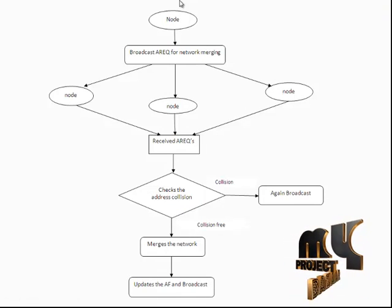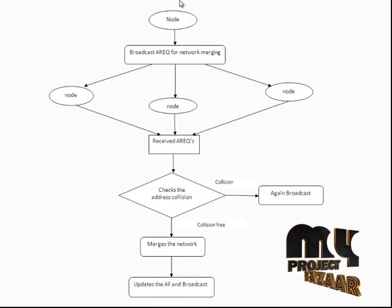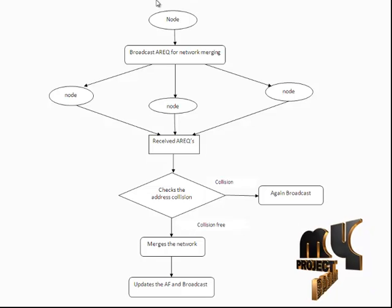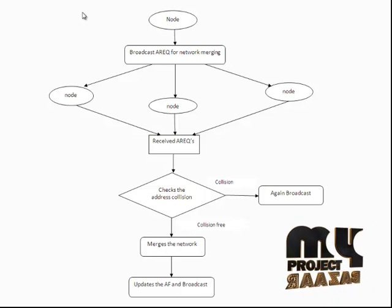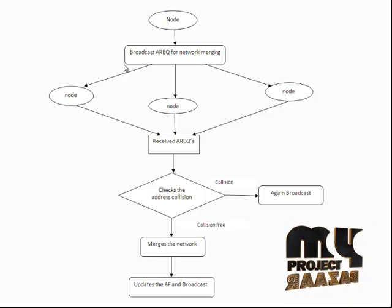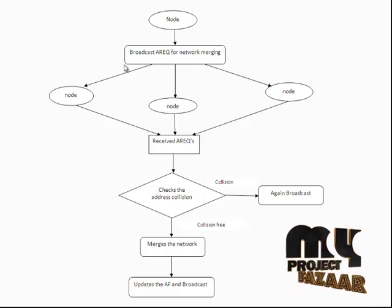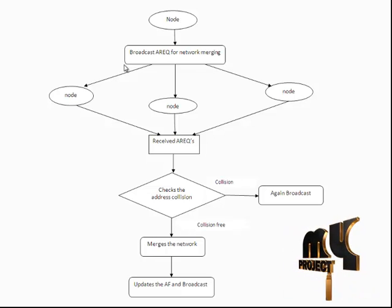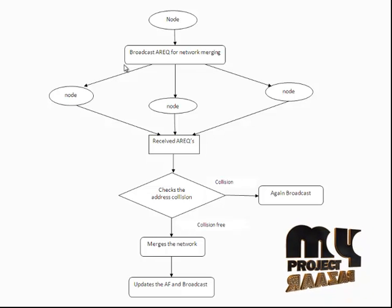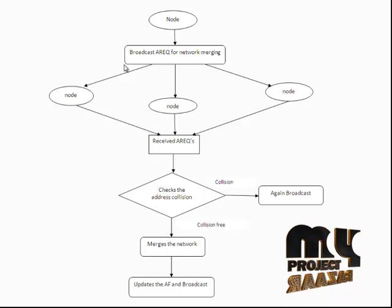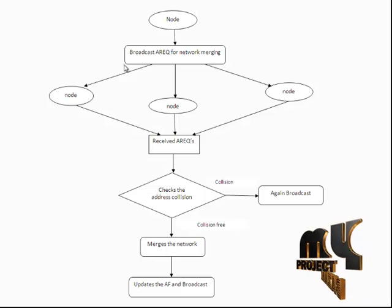The second process is partition merge. The node first broadcasts an address request for network merging, and all nodes receive the address request. It then checks for address collision. If no collision occurred, it merges the network; otherwise, it broadcasts the message again and changes the address. Finally, the merged network updates the address filter and broadcasts the messages.